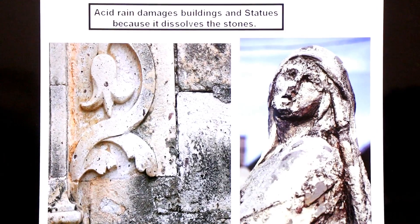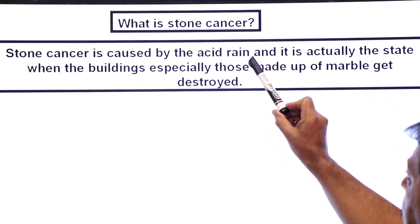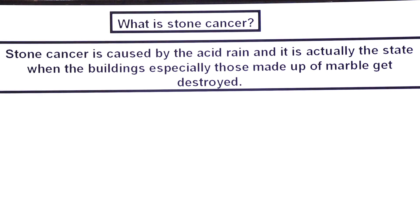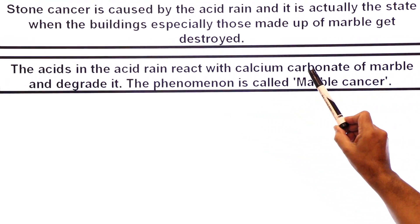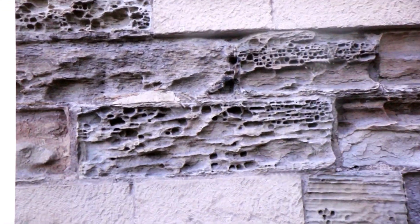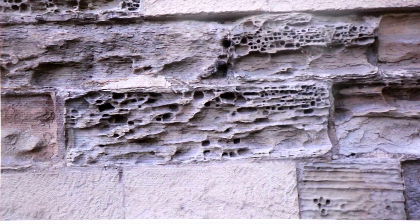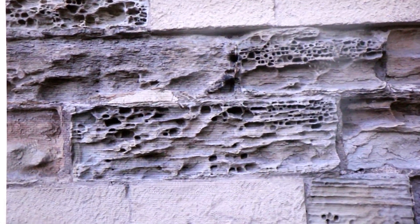The acids in acidic rain dissolve the stones. Our textbook gives a term for this: stone cancer. In acidic rain, the term stone cancer is mentioned, and many students ask what is stone cancer. Stone cancer is caused by acid rain — it is actually the state when building stones especially made up of marble get destroyed. The acids in the rain react with calcium carbonate of marble and degrade it. This phenomenon is called marble cancer, and is a type of stone cancer.